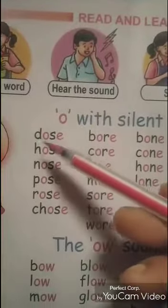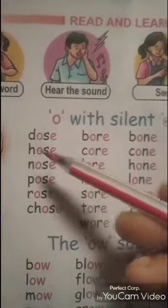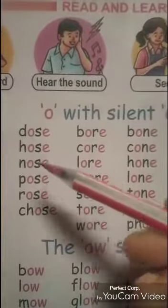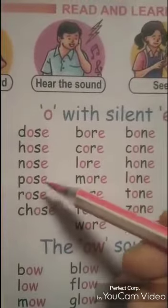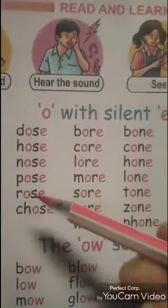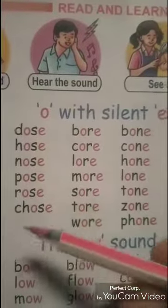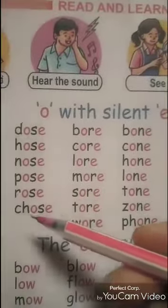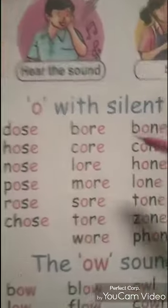D-O-S-E, Dose. H-O-S-E, Hose. N-O-S-E, Nose. P-O-S-E, Pose. R-O-S-E, Rose. C-H-O-S-E, Chose. Then here are other types of rhyming words.